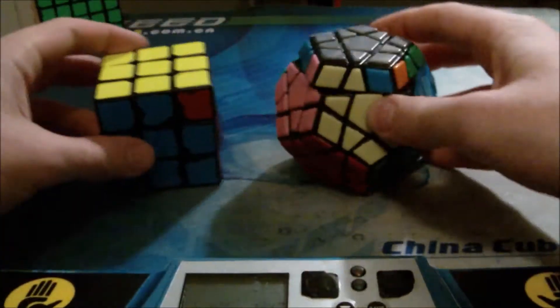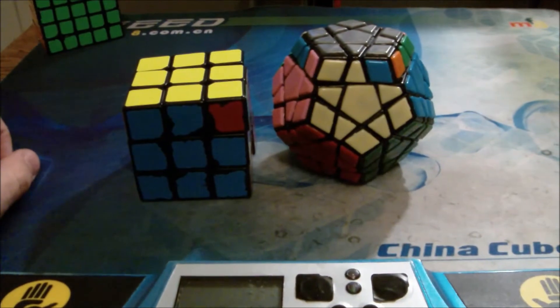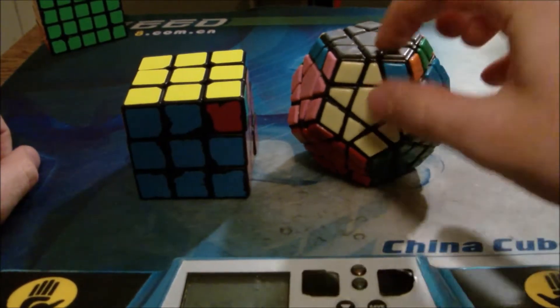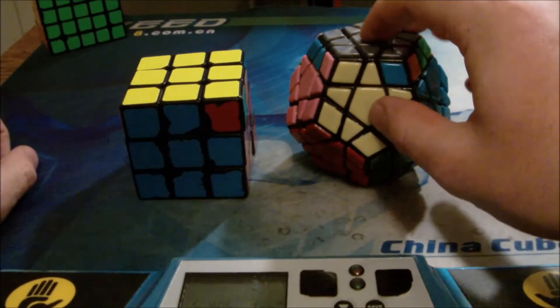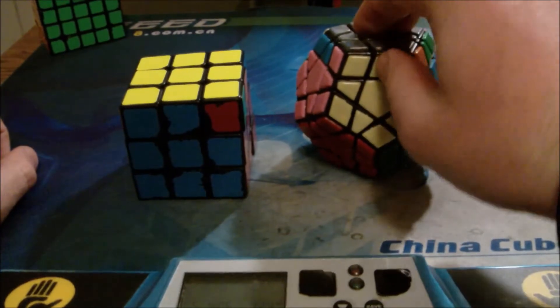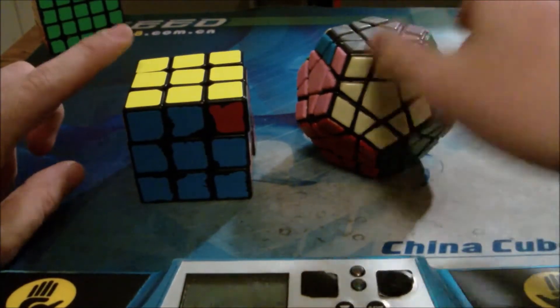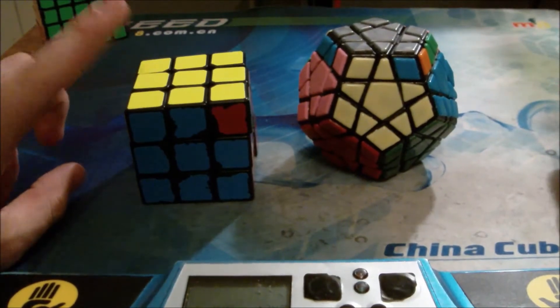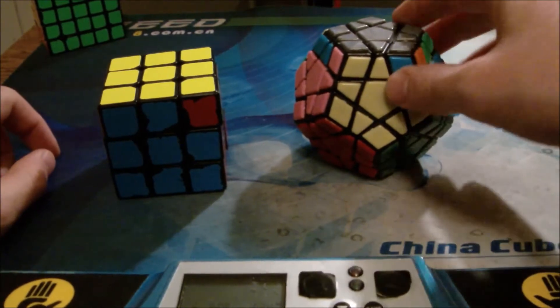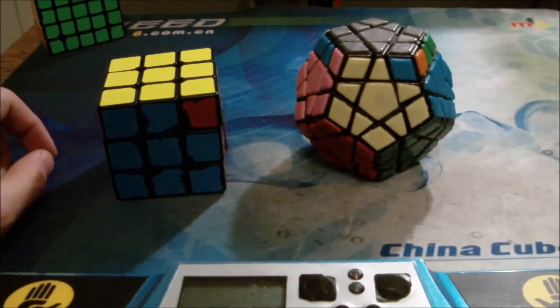So now, T-perm. The cool thing about T-perm on Megaminx is that you can always AUF it to the same case. So like for J-perm, there are two distinct cases, just like on 3x3. But you'll see with the Y-perm, it's different. But there's only one, if you AUF correctly, there's only one T-perm on the Megaminx.